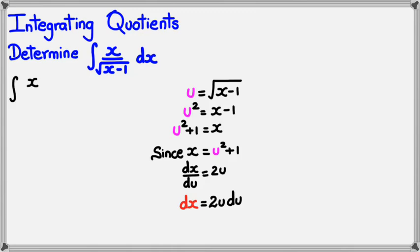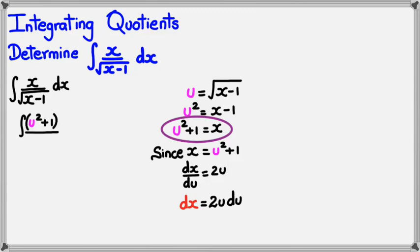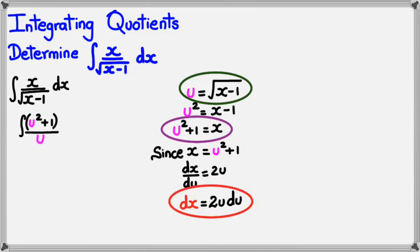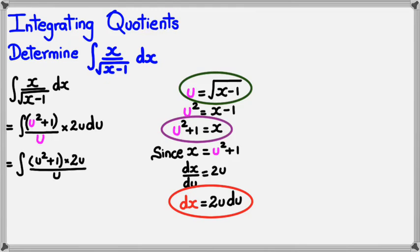So we've got the integral of x divided by √(x minus 1) dx. We know x is u² + 1 (in the purple circle), and we know √(x minus 1) is u (in the green circle), and dx is 2u du. So this becomes the integral of (u² + 1) times 2u, all divided by u, du. We have u in the numerator and u in the denominator, so they cancel, leaving the integral of 2(u² + 1) du.